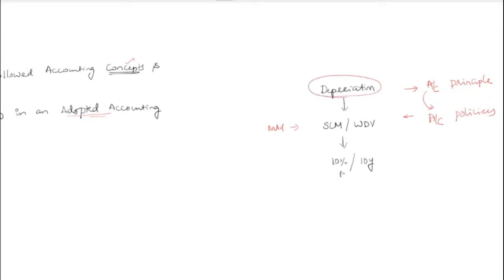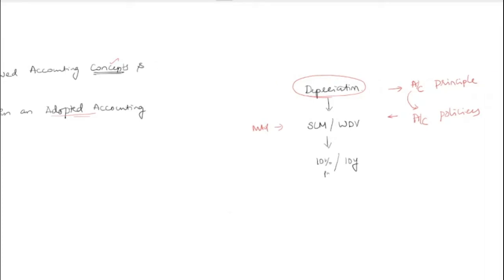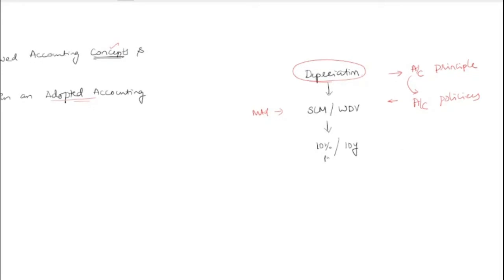So the definition: accounting policies are methods to be followed and adopted under an accounting principle. If you want to charge depreciation, charging depreciation is the accounting principle, but which method — SLM or WDV — the company has to decide. That is accounting policy. Now, whether you charge 10% per annum or over 10 years — what determines that?